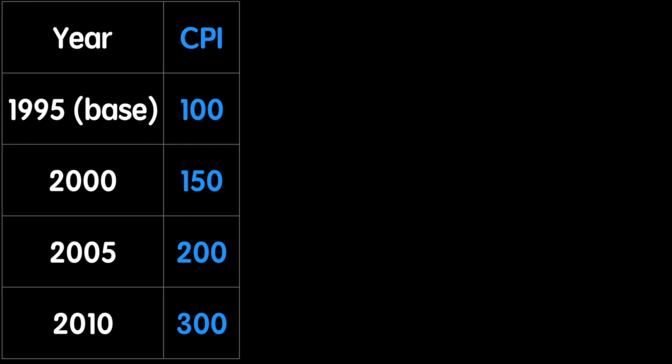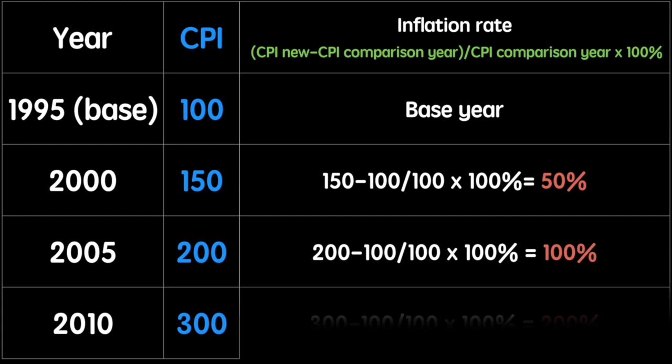When calculating the inflation rate it's vital that you subtract the CPI of the comparison year from the CPI of the new year and then divide by the value of the comparison year. We don't always calculate inflation against a base year — it's far more common to see year-on-year comparisons as well as monthly comparisons. We always include the percentage sign when calculating the inflation rate, and always ensure your calculations are written out in full. Don't skip any steps in your work when responding to exam questions.